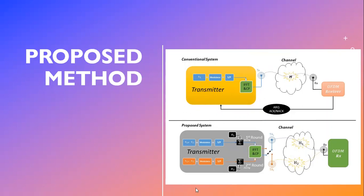The block diagram shows the proposed model. On the upper part is the conventional system employing SISO configuration with conventional ARQ (Automatic Repeat Request). In our proposed system, we utilize dual transmission with two transmit antennas TA1 and TA2, utilized in two rounds where only one antenna is active at a time. In the conventional system, only single data x1 is sent from transmitter to receiver, so the data rate is not increased. In our proposed system, we send double the data — x1 and x2 — for a single user, increasing the data rate.